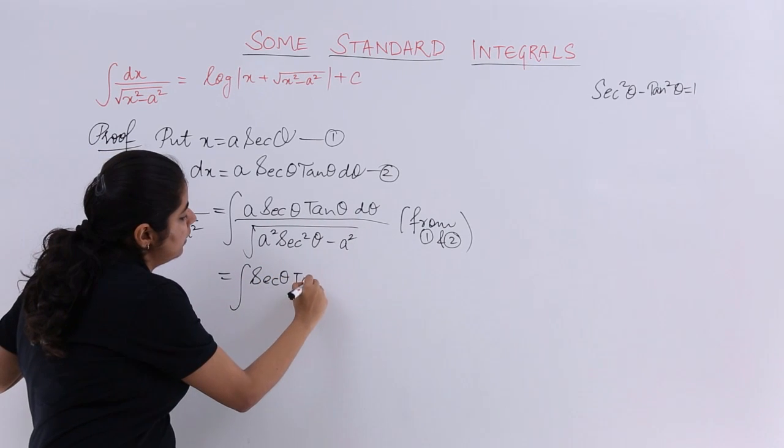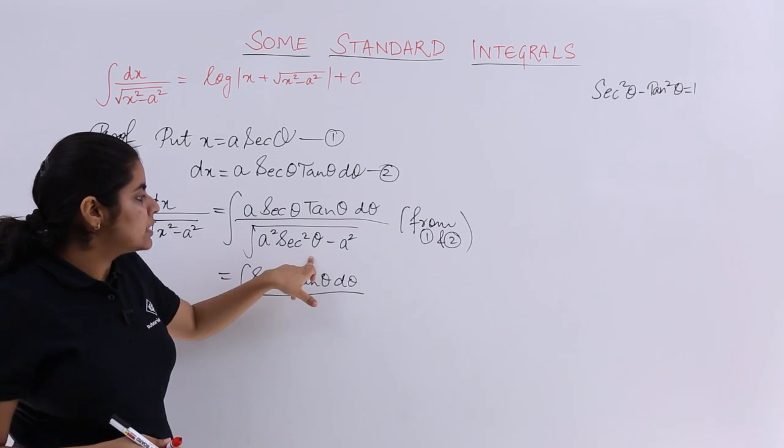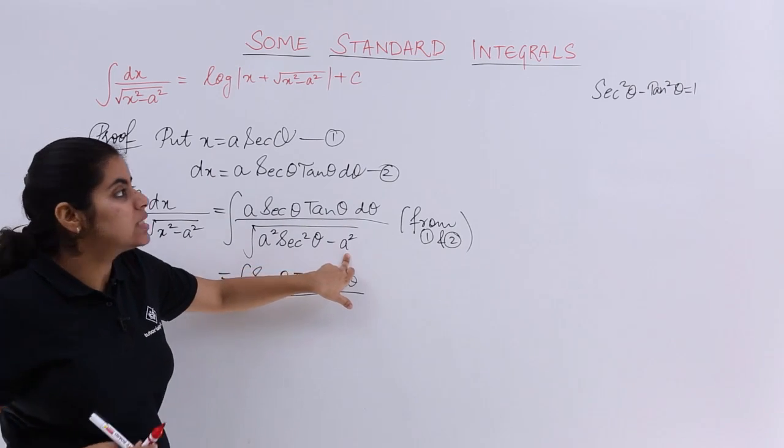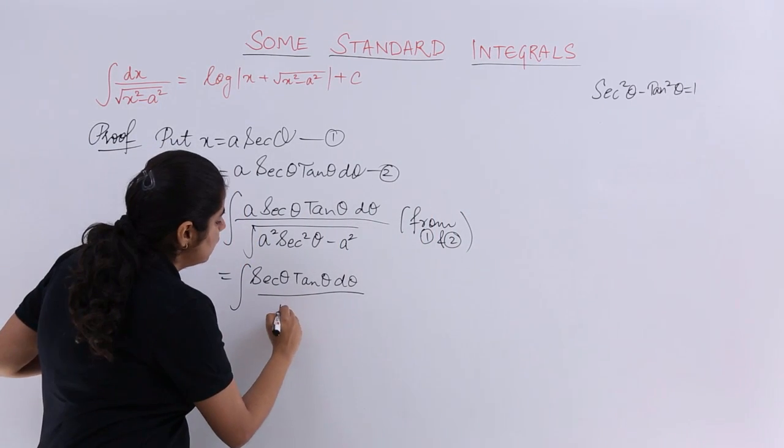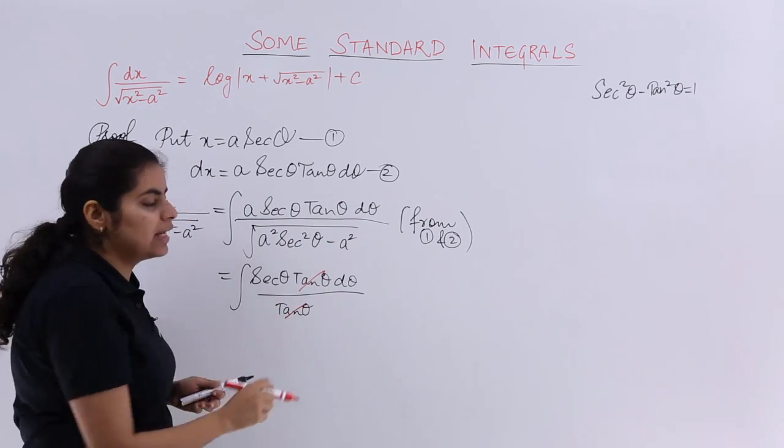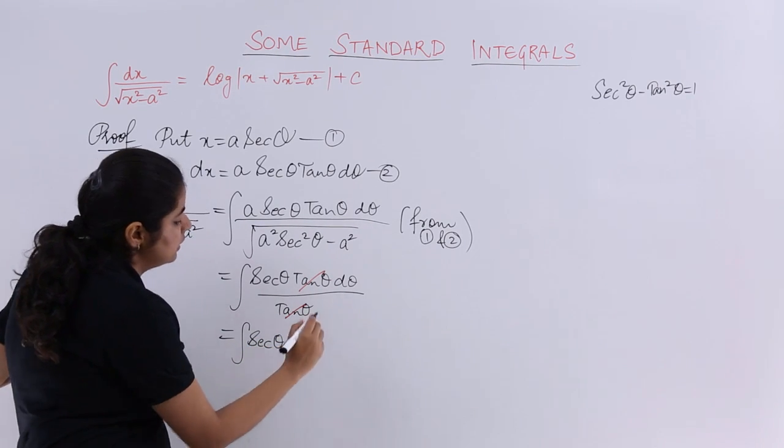You are left with secant theta tan theta d theta in the denominator under root secant square theta minus 1, because a square would come outside. So secant square theta minus 1 is tan square theta. So under root tan square theta means simply tan theta. Now cancel again. So you are left with integration secant theta d theta.